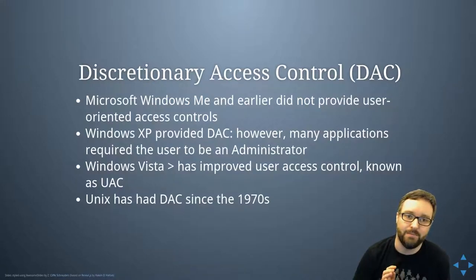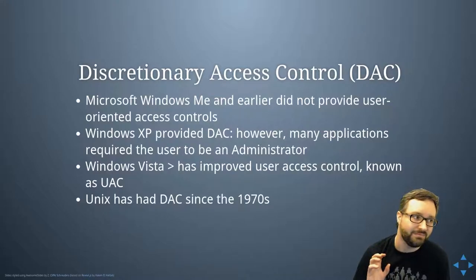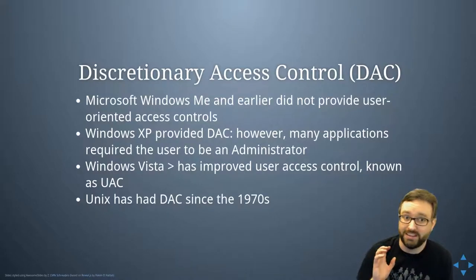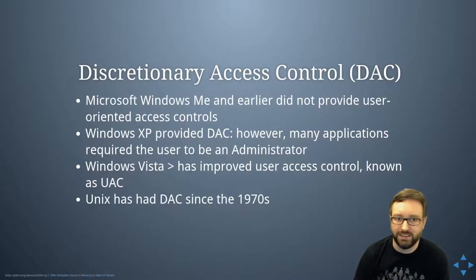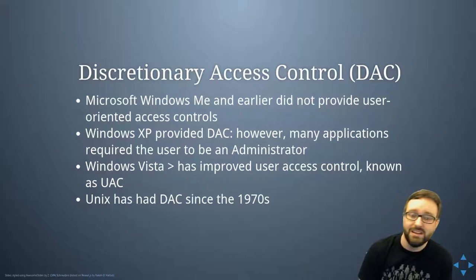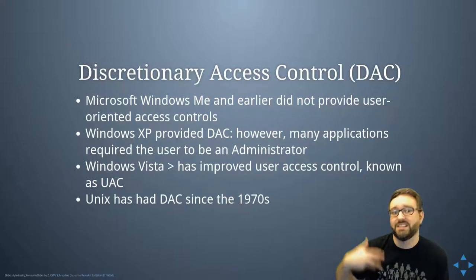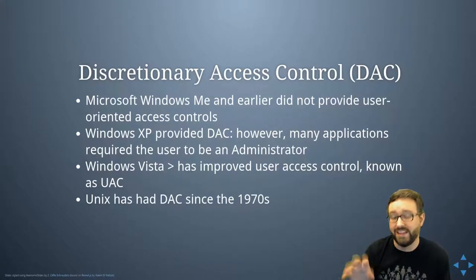It was in Windows XP where they actually started to introduce discretionary access controls. But because of the history of everyone running as an administrator, a lot of existing Windows software wouldn't work unless you were an admin, so that practice persisted. When Windows Vista came along, they tried to ease that transition by allowing privilege escalation where needed, and they introduced UAC — those pop-ups asking if you're sure you want software to perform some admin action.